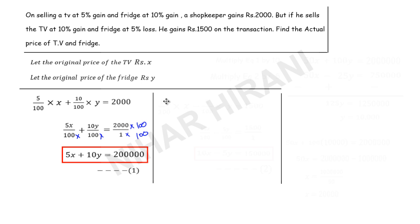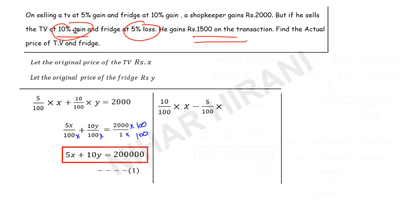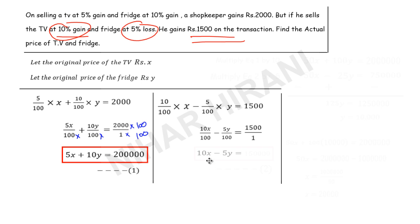Now let's work with the second statement: TV at 10% gain and fridge at 5% loss, with overall gain of Rs. 1500. So 10% of x minus 5% of y equals 1500, because we subtract the loss from the profit. That gives us 10x over 100 minus 5y over 100 equals 1500. Taking LCM, this simplifies to Equation 2. You can solve this by elimination or substitution.